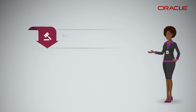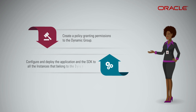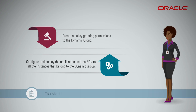Finally, complete the workflow with the following steps. Create a policy granting permissions to the dynamic group to access services in your tenancy or compartment. Then, a developer in your organization configures the application built using the Oracle Cloud Infrastructure SDK to authenticate using the instance principals provider. The developer deploys the application and the SDK to all the instances that belong to the dynamic group. The deployed SDK can now make calls to Oracle Cloud Infrastructure APIs as allowed by the policy, without needing to configure API credentials.